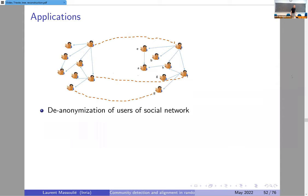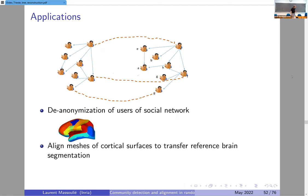Graph alignment has many applications. One well-considered application is the de-anonymization of social network data. If you have one social network where you know the identities of individuals and one that is anonymized, and you can align the two graphs, you can carry the identities from the non-anonymous data to the anonymized data — effectively de-anonymizing it. So it's a breach of privacy if you can succeed at aligning graphs.